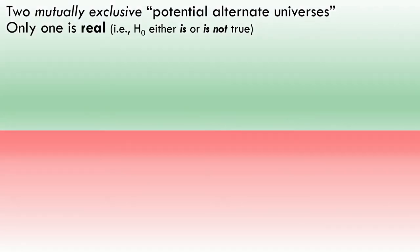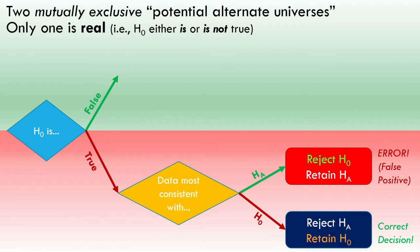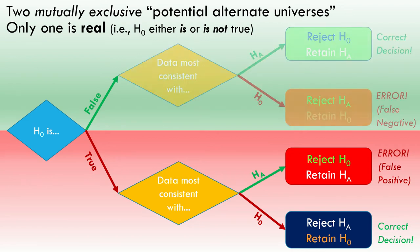In reality, the null is either true or false. If the null is true and the data is most consistent with it, we retain the null — the correct decision. If the data is not most consistent with it, we reject it, but that would be an error. All the reverse happens if the null is actually false. We never know if we're making the wrong decision, and statistically, we probably are sometimes.